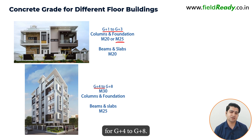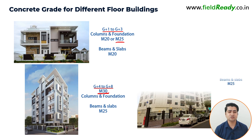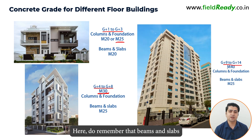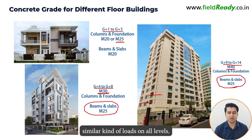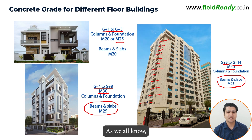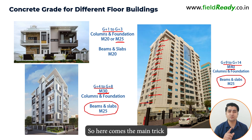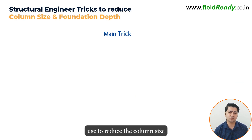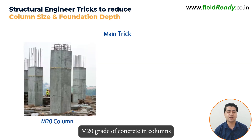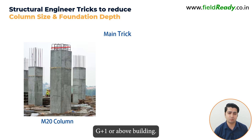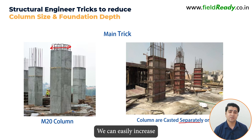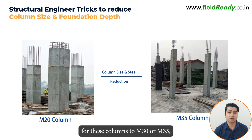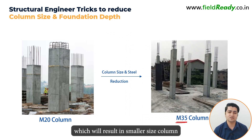For G+4 to G+8, it will be M30, and for G+9 to G+14, it will be M40. Do remember that beams and slabs can be easily cast in M25, as floors will receive similar kinds of loads on all levels. As we all know, concrete is much cheaper than steel. So here comes the main trick which structural engineers use to reduce the column size and steel requirements. We can easily increase the grade of concrete for columns to M30 or M35, which will result in smaller size columns and less steel.